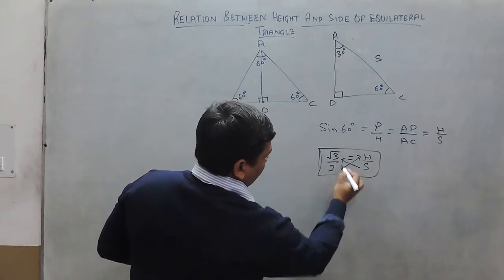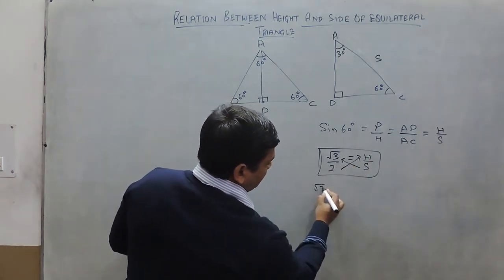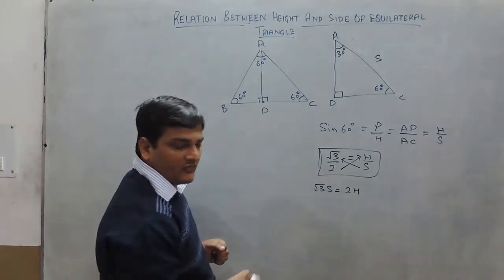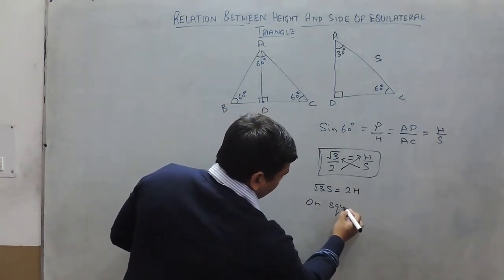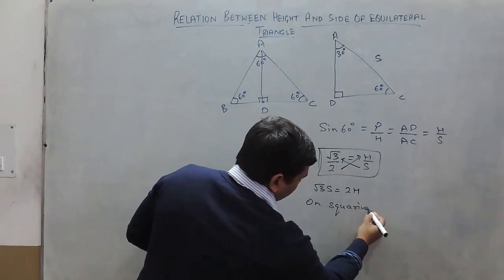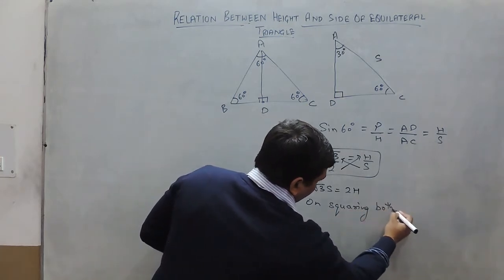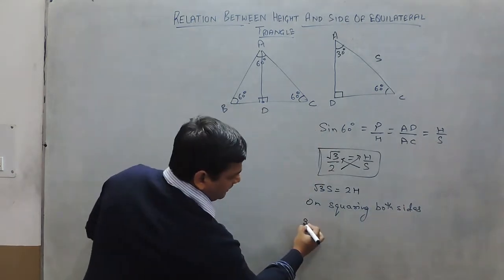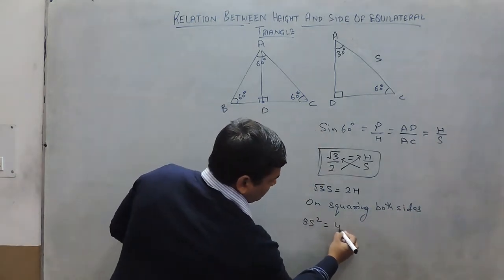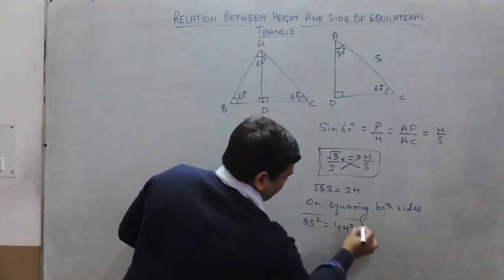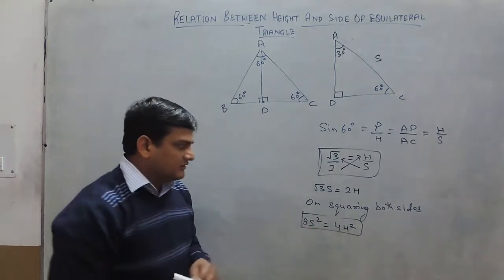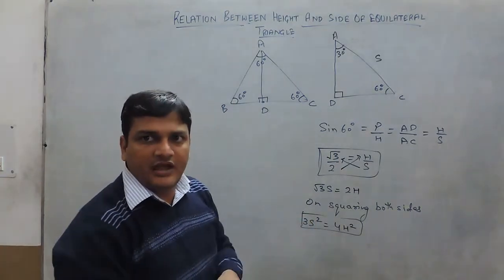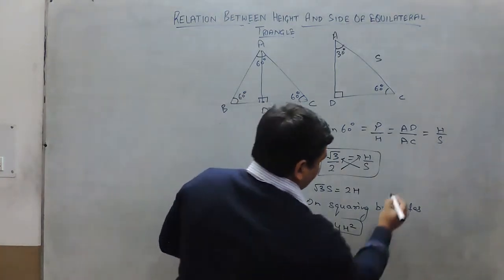if we cross multiply this ratio, then root 3s equals to twice of h. On squaring both sides, we have 3s square equals to 4h square. This is also a ratio relation between height and side of equilateral triangle.